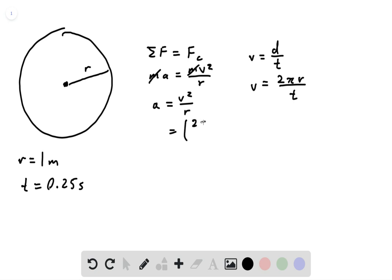This gives us 2 pi r divided by t squared times r over r. And we can reduce that to 2 pi r divided by t squared times r for the radial acceleration.